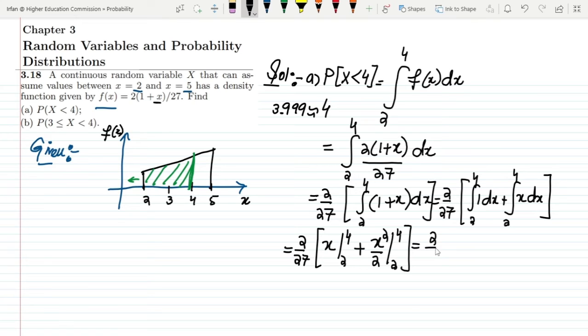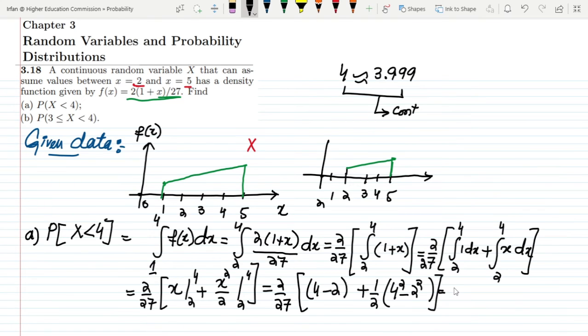Also this 2/27. Here we will have 4 - 2, plus this—this is the higher range in this x while this is the lower value, lower range value. Similarly here we will have 1/2, and now x² higher minus x² lower value. Now finding it, what I will get is 2/27. Here we will have 4 - 2 which is 2. Here this is 4 times 4 is 16, 16 - 4 is 12, 12 / 2 is 6.